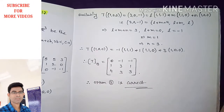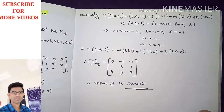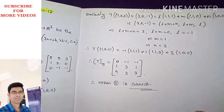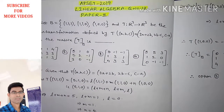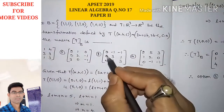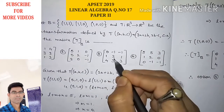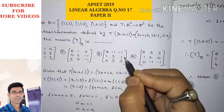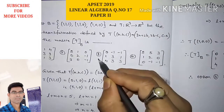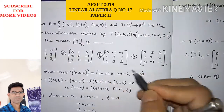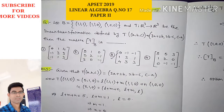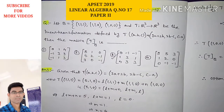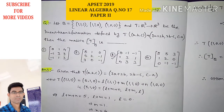Therefore, the matrix representation of T with respect to basis B has columns (0,1,4), (−1,3,3), and (−1,1,3). Option number 3 is correct. I hope you liked this video. Please share and subscribe. Thanks for watching.